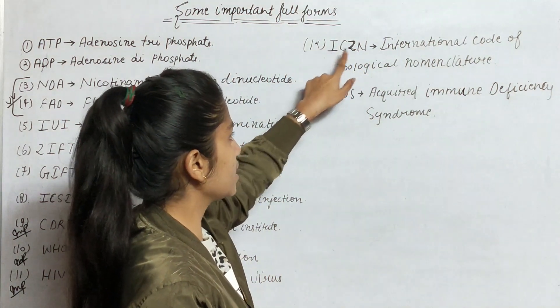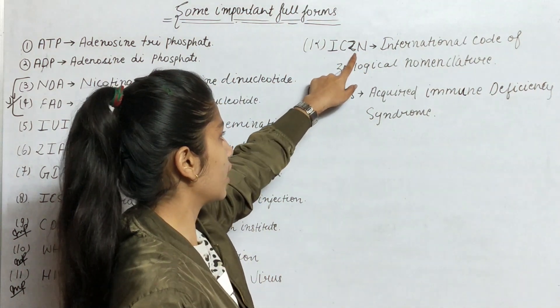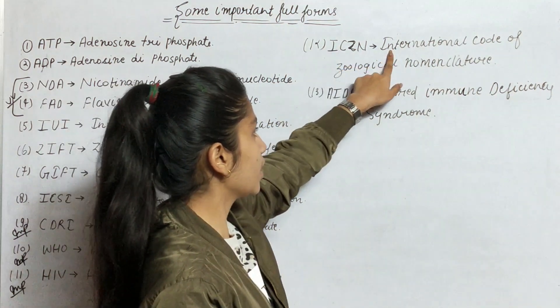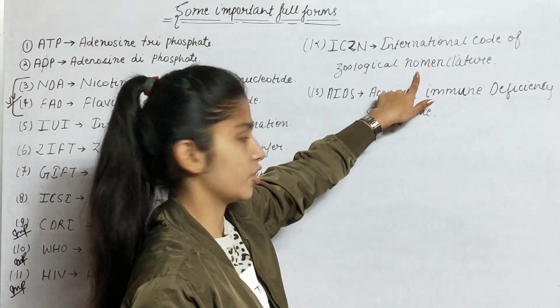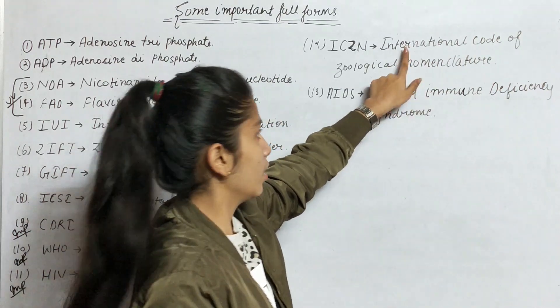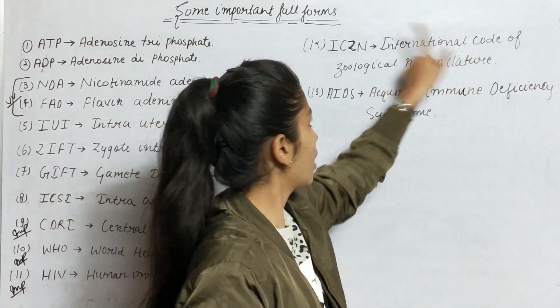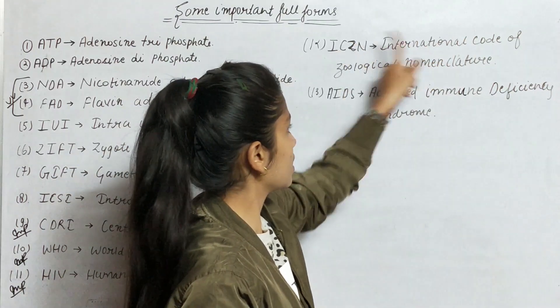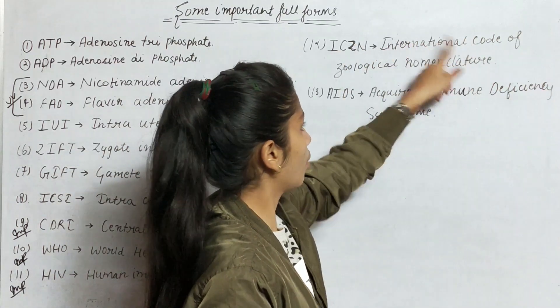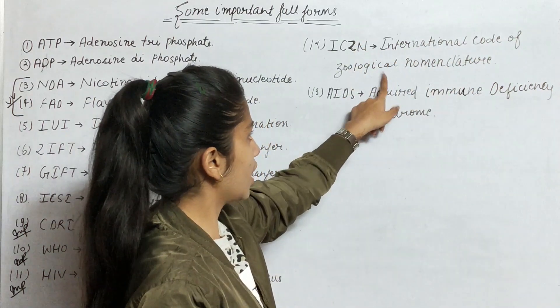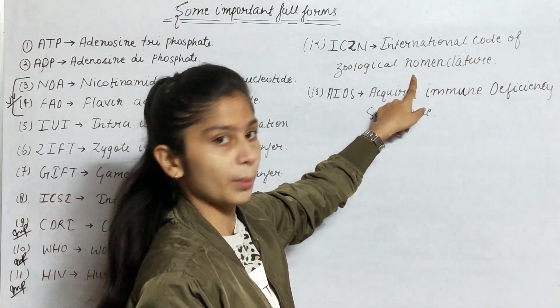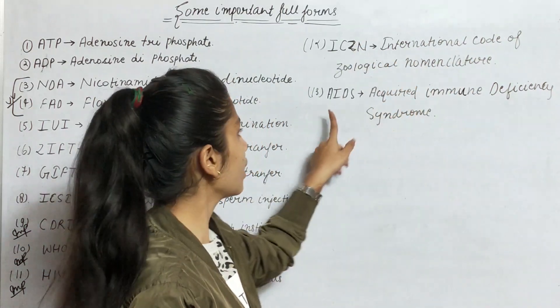Next is ICZN — this is also important. ICZN stands for International Code of Zoological Nomenclature. I for International, C for Code, Z for Zoological, and N for Nomenclature.